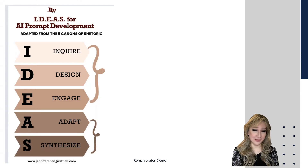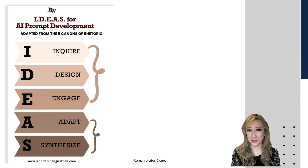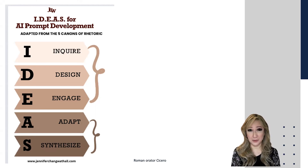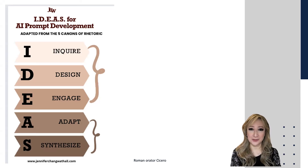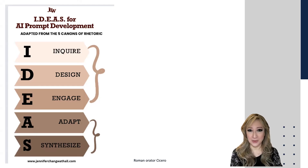The five canons of rhetoric were developed by the orator Cicero. Originally these tenets were created to focus on public speaking and communication, and I think they can also be applied to the iterative process of writing — when we're drafting, editing, and rewriting pieces of work. So let me go through those canons and then explain why we can use this acronym: Inquire, Design, and Engage first, and then once we have an output, Adapt and Synthesize.